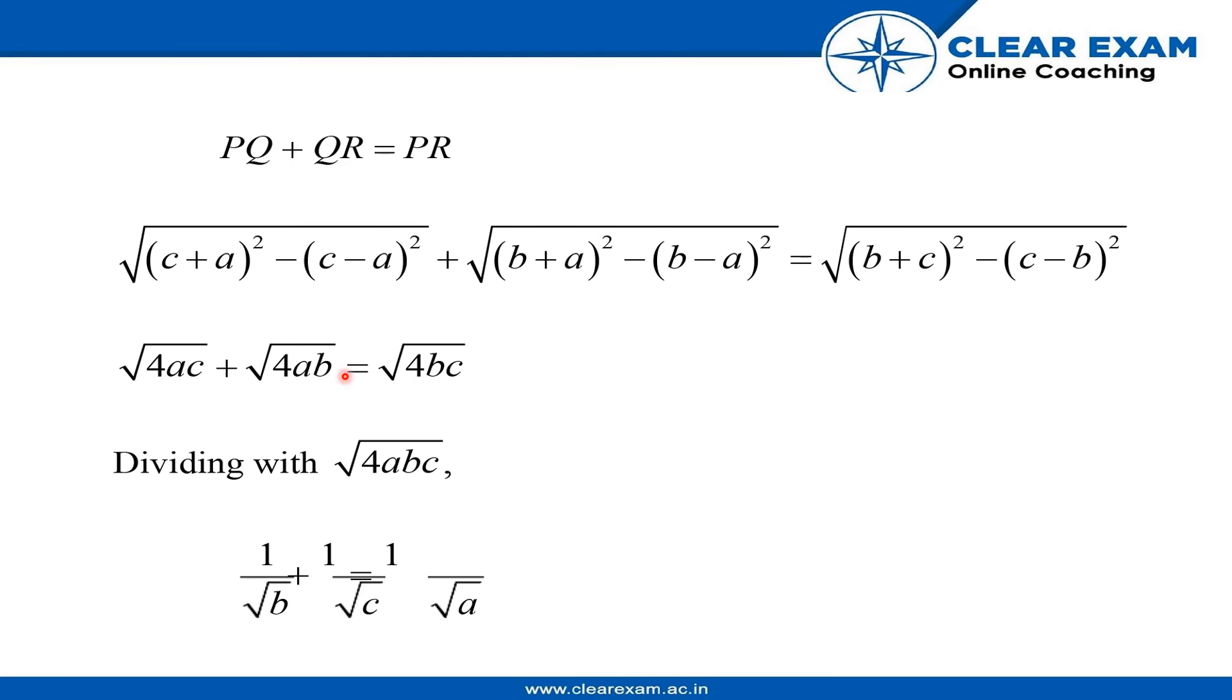It will be solved in the formula. Under root of 4AC plus under root of 4AB equals under root of 4BC. Dividing this whole equation by under root of 4ABC.